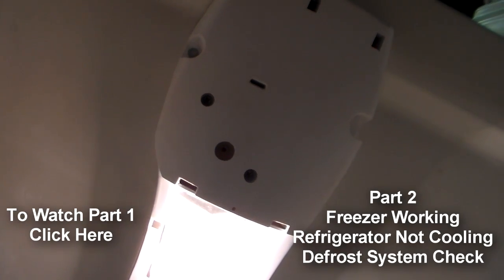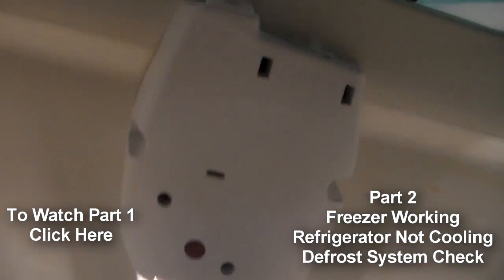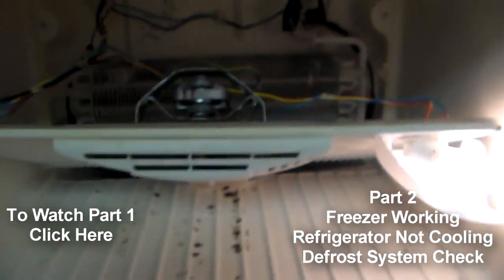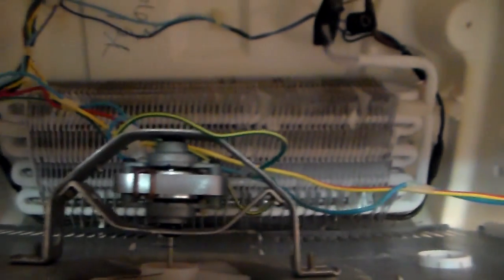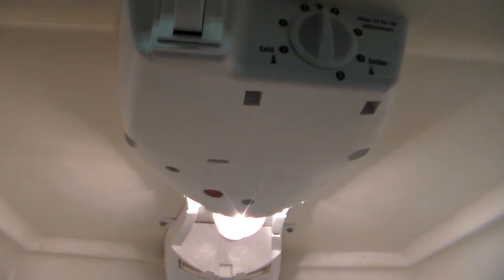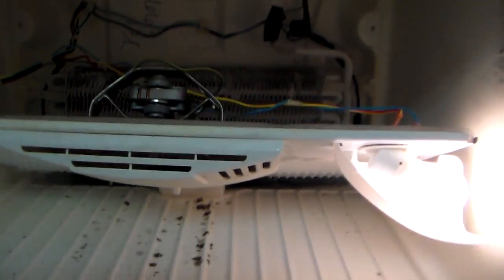Now the machine is in defrost. So what you want to do if you know you have a defrost problem - this thing here is frozen solid back here, completely frozen solid - first thing you want to do is spin the timer around to defrost until it clicks and everything shuts off. Now you just want to wait.